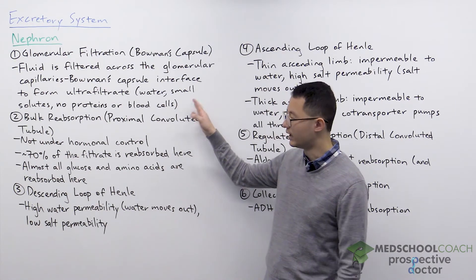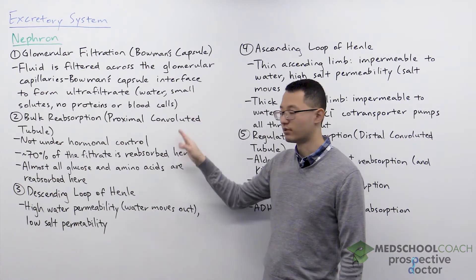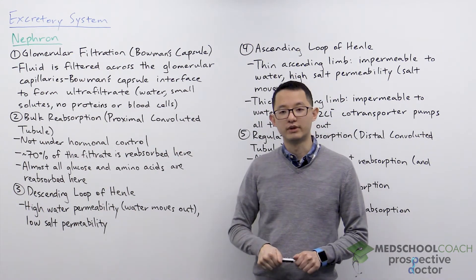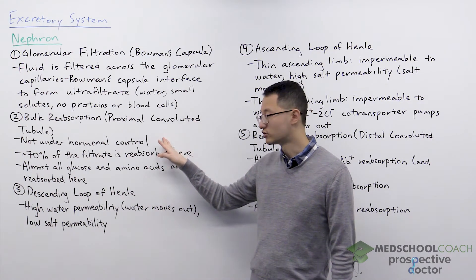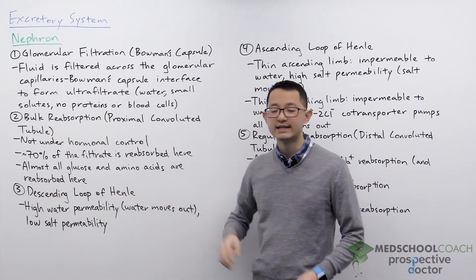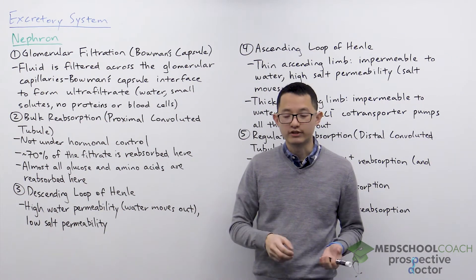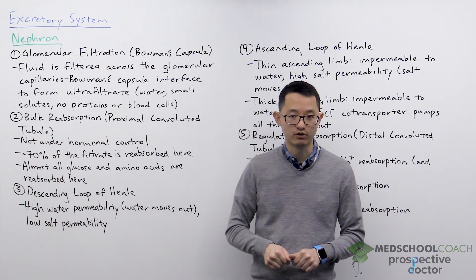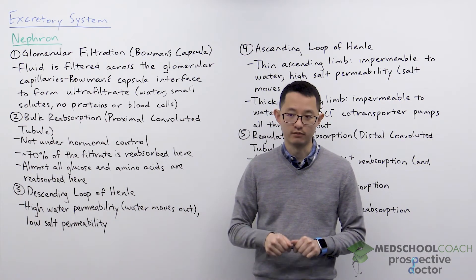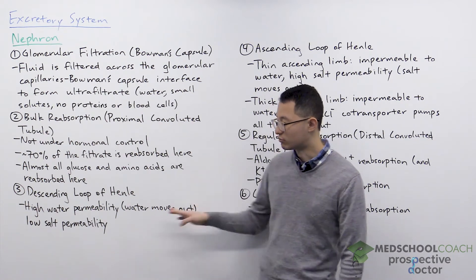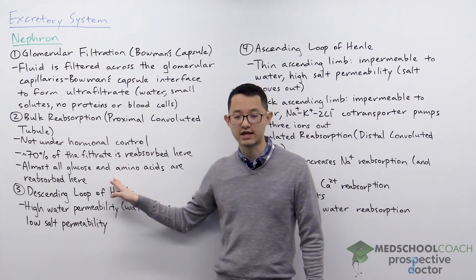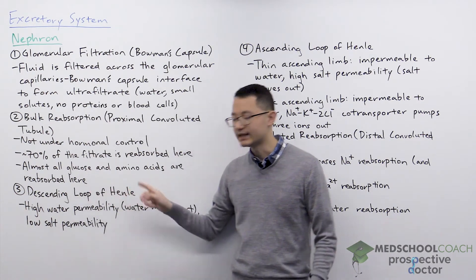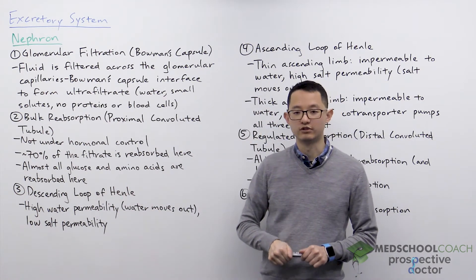The next step is for the filtrate to pass into the proximal convoluted tubule where bulk reabsorption occurs. It's called bulk reabsorption because it is not under hormonal control and because seventy percent of the fluid and solutes that originally got filtered across the glomerular capillaries actually gets reabsorbed. The purpose of this is to reabsorb solutes we want to keep in the body, including almost all the glucose and amino acids that were filtered.